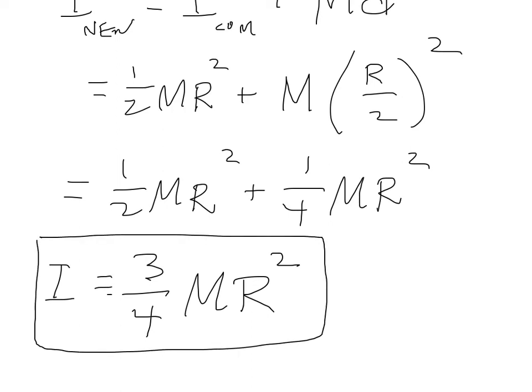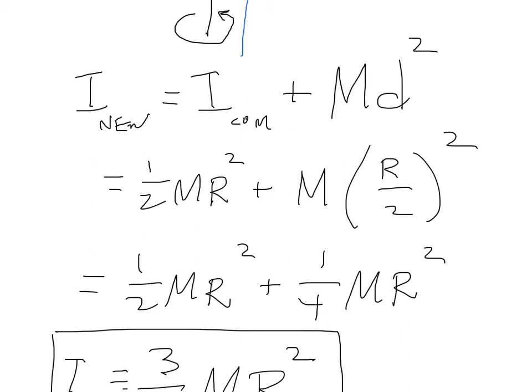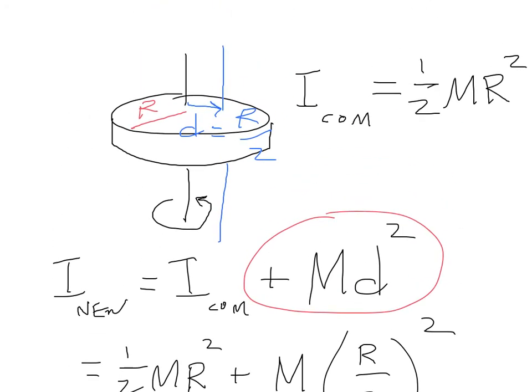Now an important thing to notice about this, and it's probably obvious, but I'm going to point it out to you anyway, is that you always increase the moment of inertia when you move the axis off the center of mass. And so that means the lowest moment of inertia you'll ever have is when the axis is going through the center of mass.